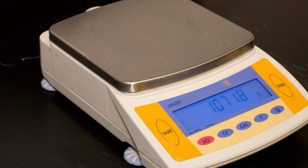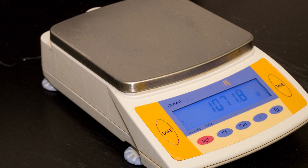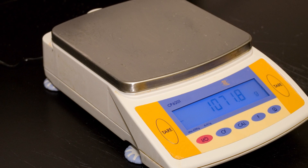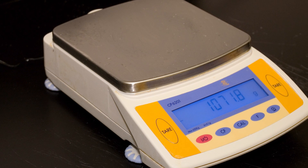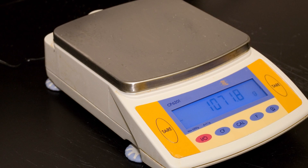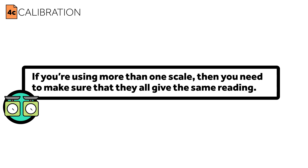This applies to all measurements, both physical and behavioral. Weight scales, for instance, need to be checked against known standards to make sure that the results they're giving are accurate. They need to have those measurements repeated, time and again, to make sure that they're precise. If you're using more than one scale, you need to make sure that they all give the same reading.